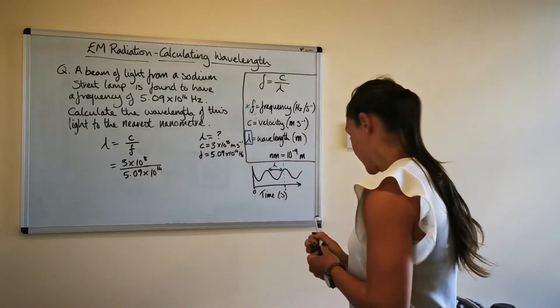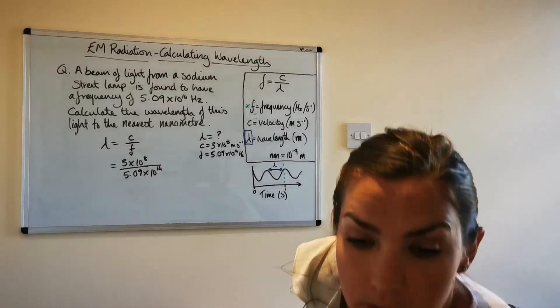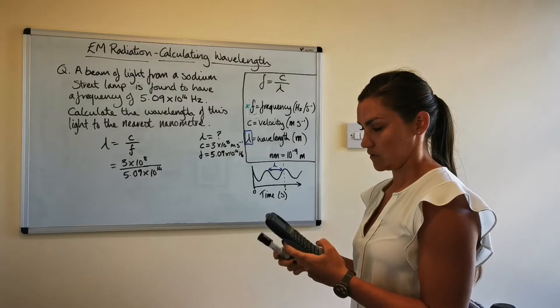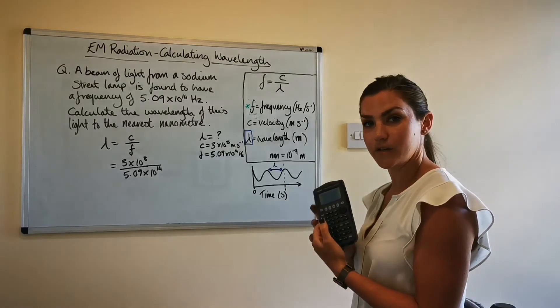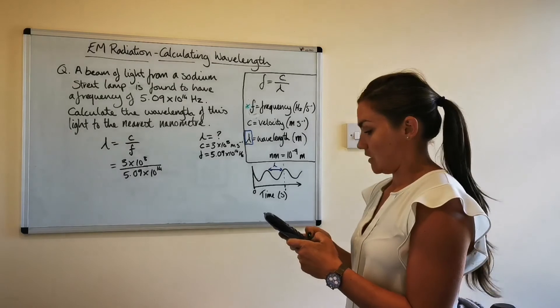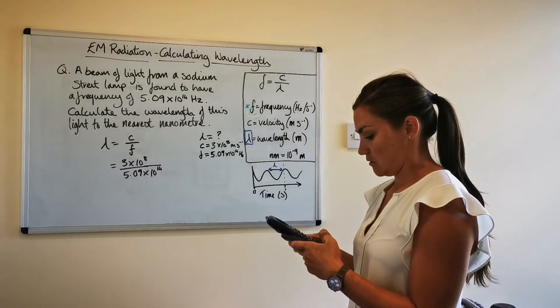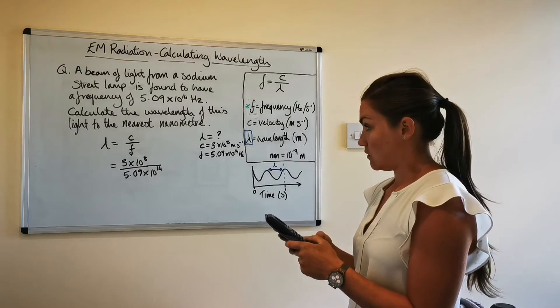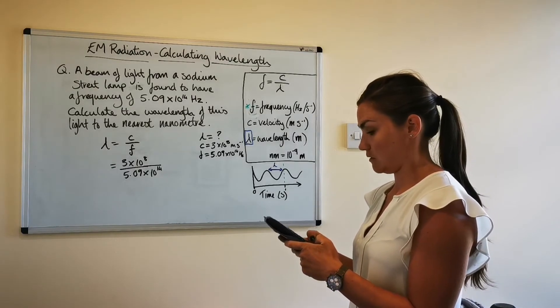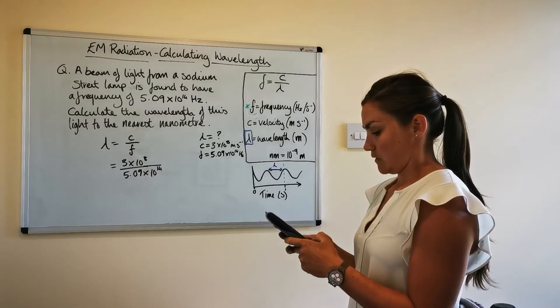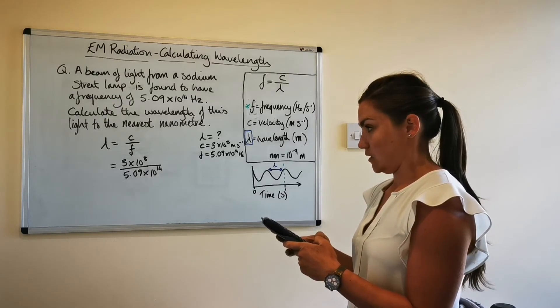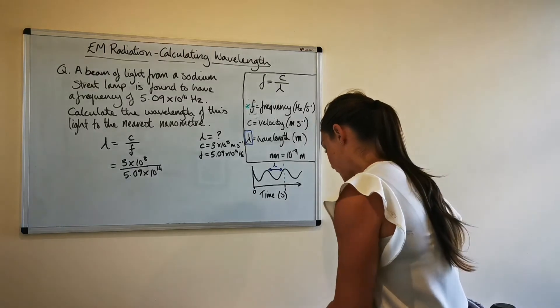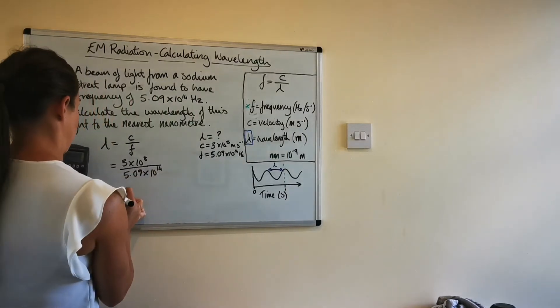And then plug that into my calculator, my calculator from back in 2003 it's an antique. So 3 times 10 to the 8 divided by 5.09 times 10 to the 14 okay so that comes out as 5.89 and I'll just round it to two decimal places times 10 to the minus 7.